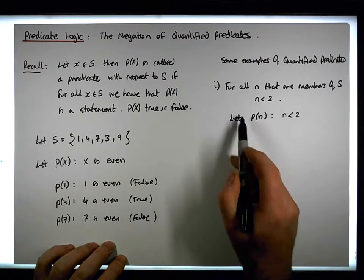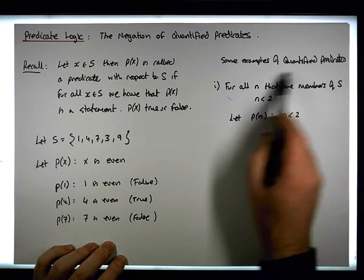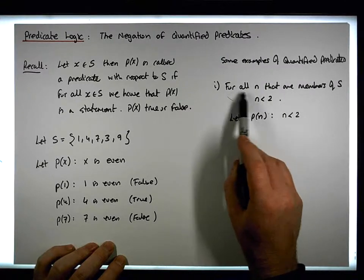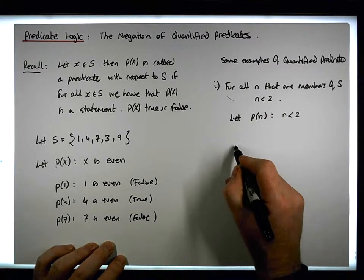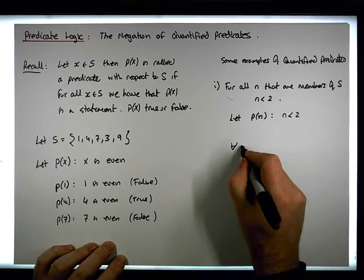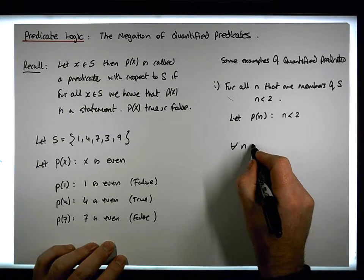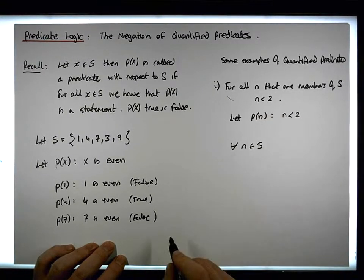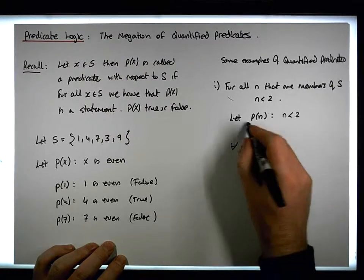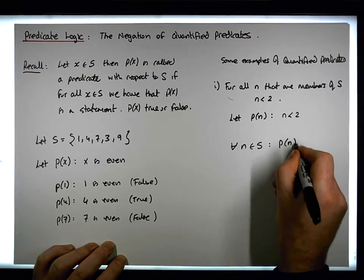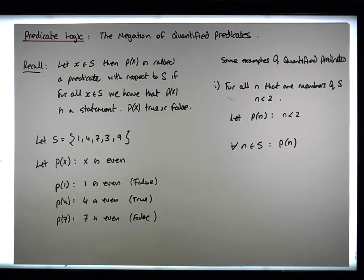What we need to do is construct the quantified predicate. So this is saying that for all — for each and every n that are members of s, for each and every n that's an element of s, we have P of n.